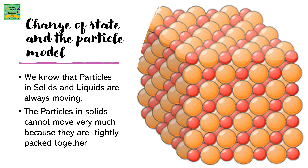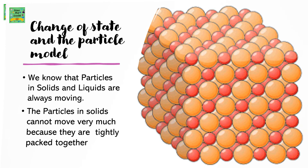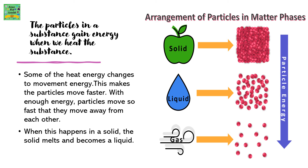Change of state and the particle model. We know that particles in solids and liquids are always moving. The particles in solids cannot move very much because they are tightly packed together. The particles in solids gain energy when we heat the substance. Some of the heat energy changes to movement energy, making the particles move faster. With enough energy, particles move so fast that they move away from each other. When this happens in a solid, the solid melts and becomes liquid.